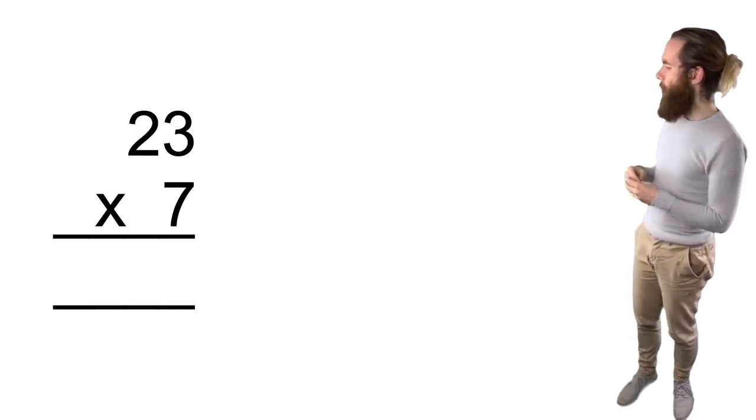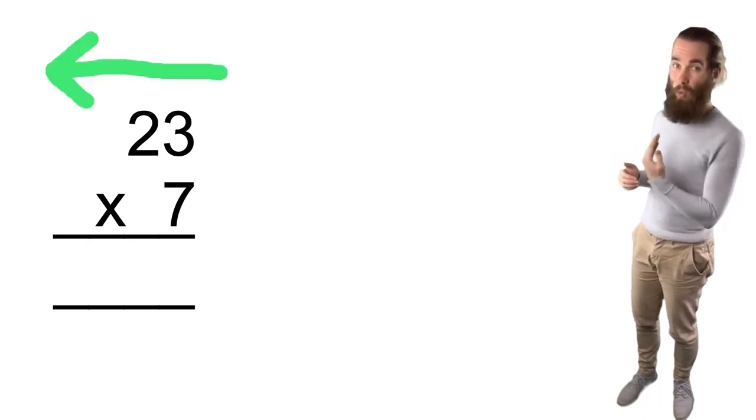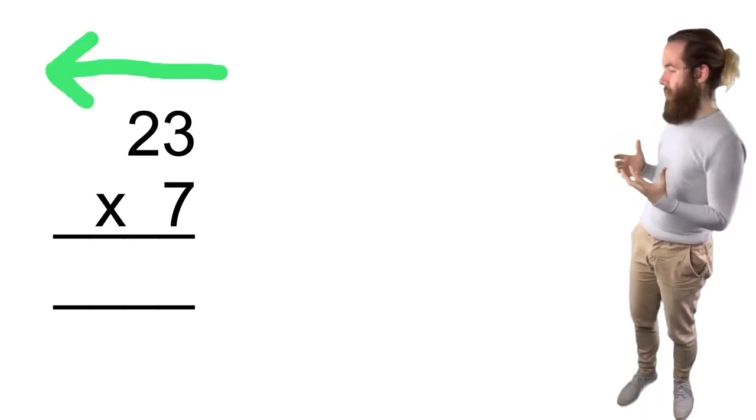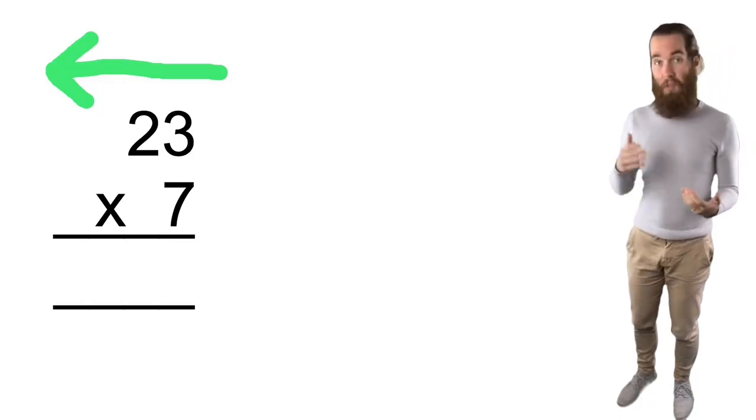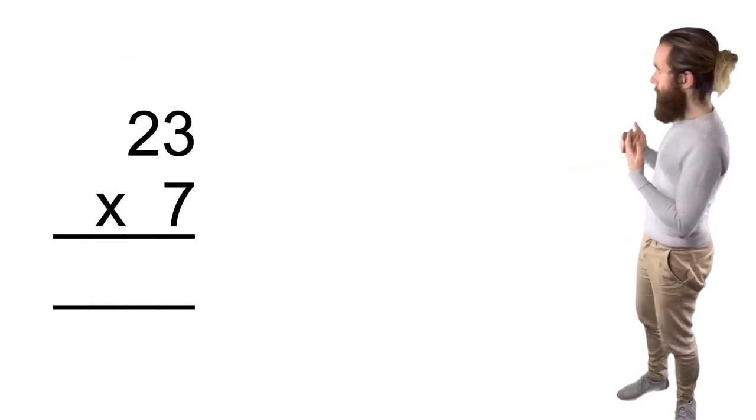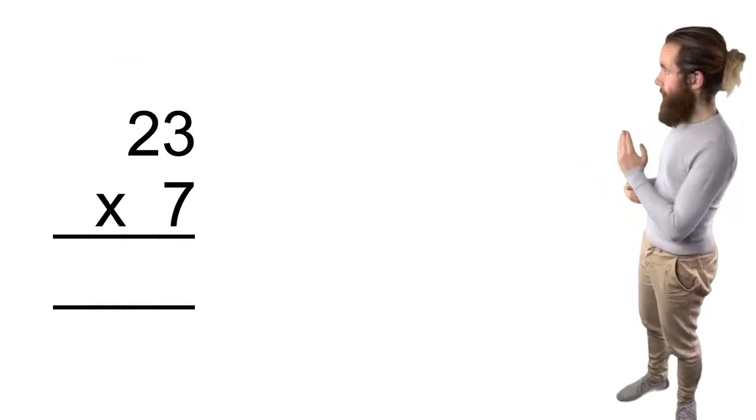So I want to multiply the top number by the bottom number and I'm going to work them out from right to left. I'm going to start with the units, then tens, and if I've got hundreds, hundreds, and thousands, thousands, and so on. So I've written it out and now I need to start multiplying these together, working from right to left.